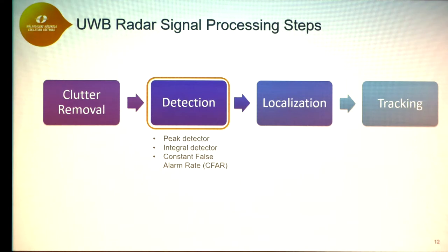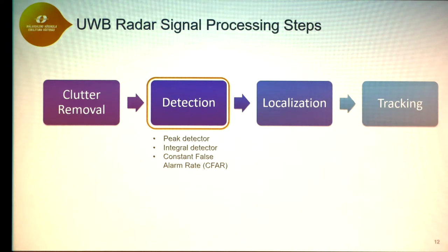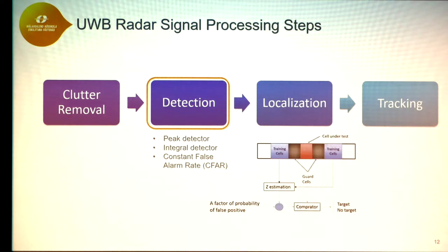In the detection step we detect the target. We can simply look at the peaks of the raw data signal — sometimes the highest peak belongs to the target. When it does not, we use the integral under the peak, which can be large enough to represent the target. Another very common detector is the constant false alarm rate (CFAR) detector, where the probability of false positives is kept at a constant rate, and every cell is compared to its neighboring cells to determine if it represents a target.